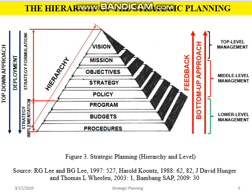We can see this topic as a Hierarchy. From the left side, we can see Deployment — this is a Top Down Approach. On the right side, we need Feedback and a Bottom Up Approach. The strategy is divided by 3 levels: Vision and Mission are designed by Top Level Management; Objective, Strategy, and Policy by Middle Level Management; and Program, Budget, and Procedure by Lower Level Management.